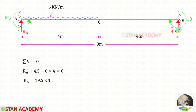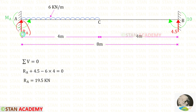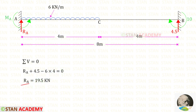We have found RB and MB. Now let us find RA using the equation ΣV = 0. RA and RB are acting upwards, so both are positive. The UDL is acting downwards, so it is negative; the loaded distance is 4 meters. Finally, for RA we get 19.5 kN.